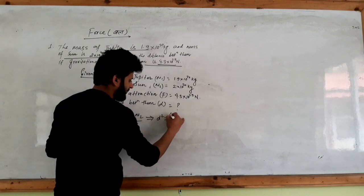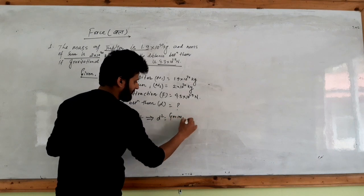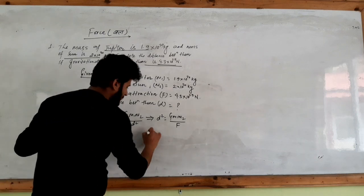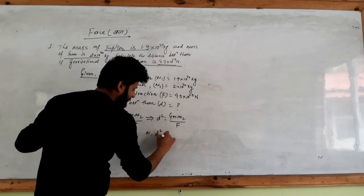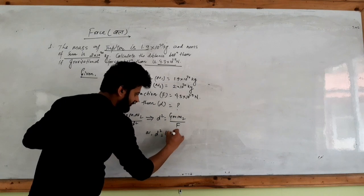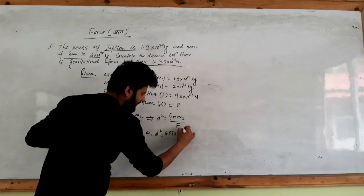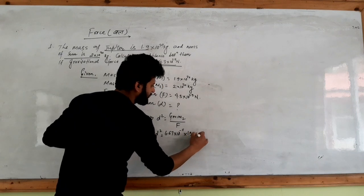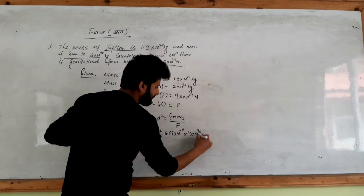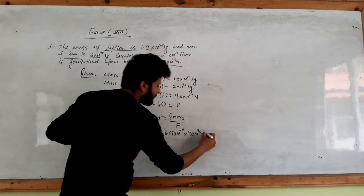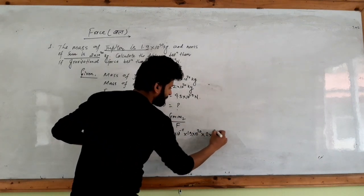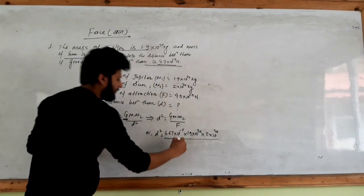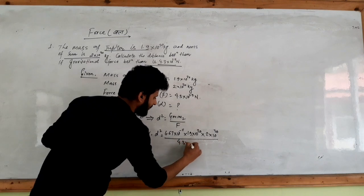D squared equals to G times M1 times M2 over F. You get this also. D squared equals to G value 6.67 into 10 to the power minus 11, into M1 which is 1.9 into 10 to the power 23, into M2 which is 2 into 10 to the power 23. This gives a spread of 3.3 into 10 to the power 24.